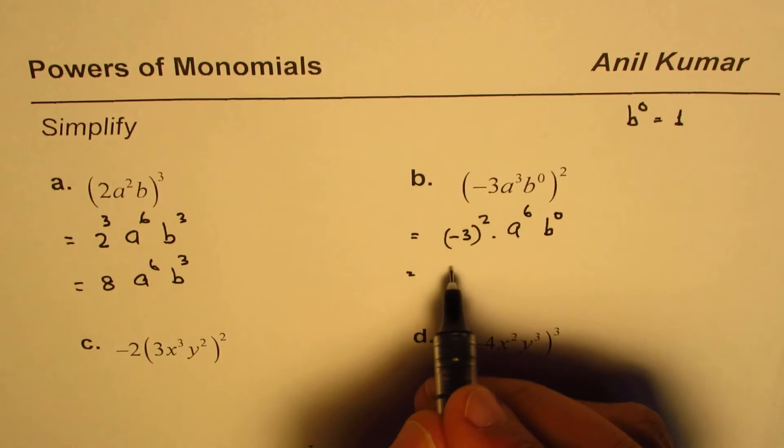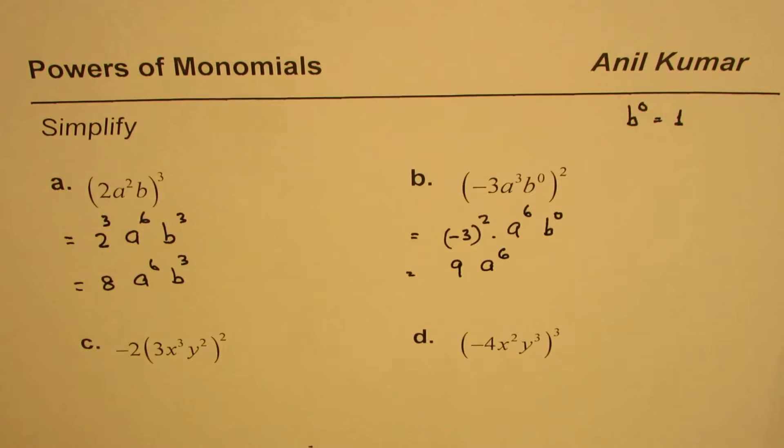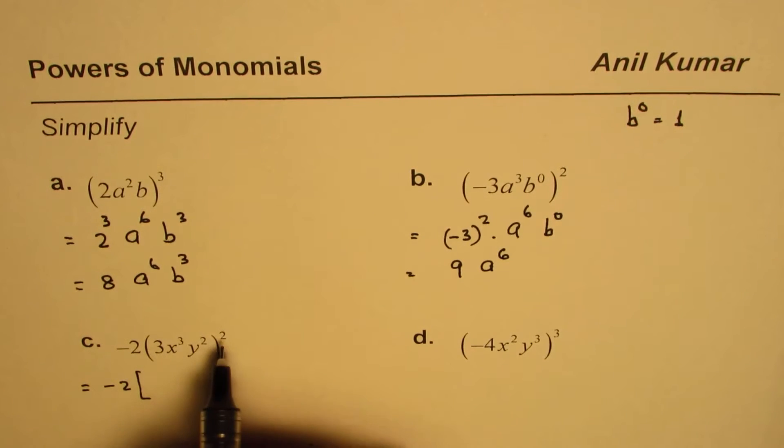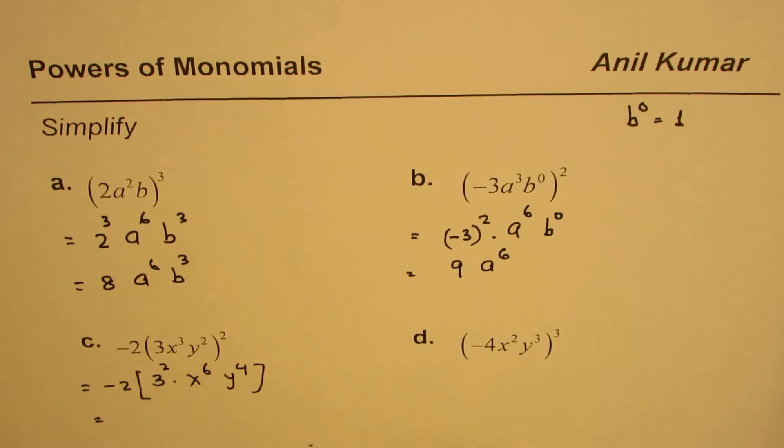In this expression, -2 is outside, and within brackets we'll apply the power of 2. So 3², x to the power of 6 (3 times 2), y to the power of 4 (2 times 2). That gives you -2 times 9, which becomes -18x⁶y⁴.